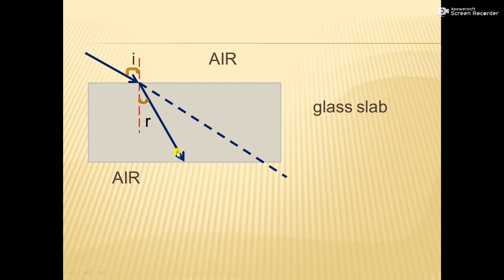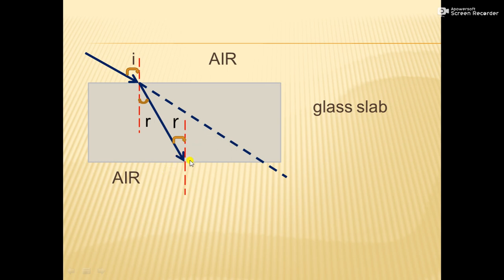This refracted ray again becomes incident on the bottom surface of the glass slab. A normal is drawn to that surface, and the angle of incidence here equals the previous angle of refraction, because alternate opposite angles are the same. From glass to air, there is a medium change from denser to rarer medium, so the ray of light speeds up and bends away from the normal.